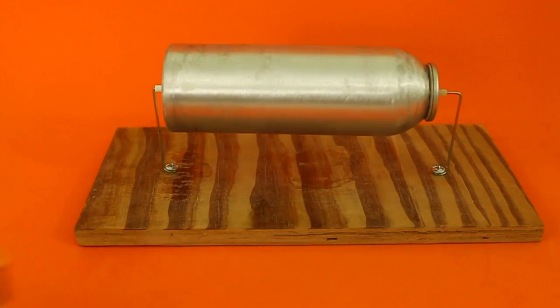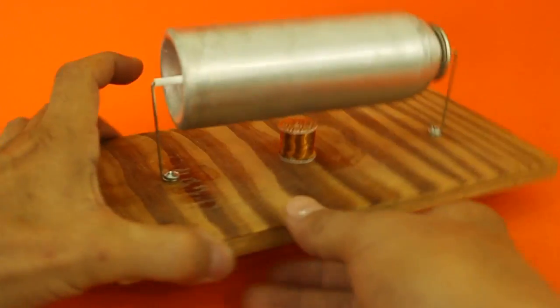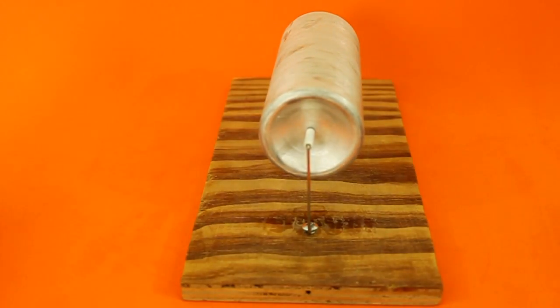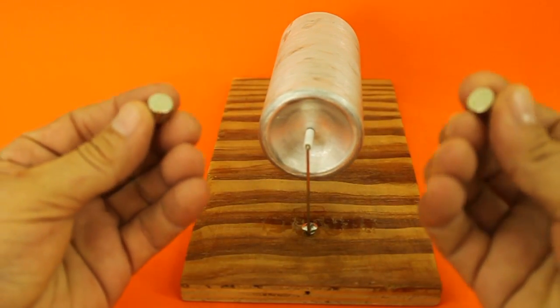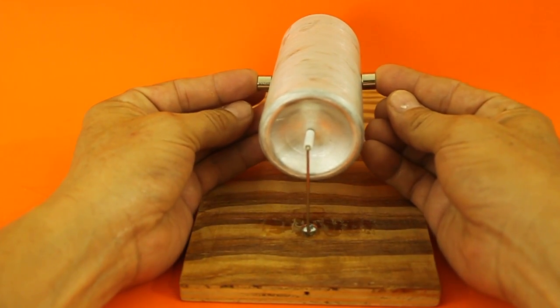The coil goes just below the rotor and we also have to put two neodymium magnets on opposite sides of the rotor.